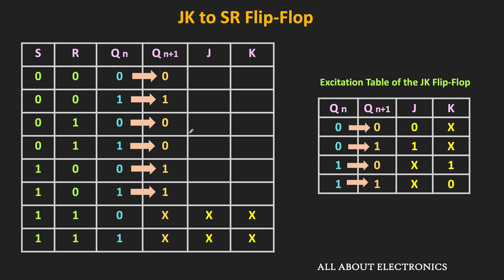From the excitation table, for the 0-to-0 transition, the required J and K inputs are 0 and X. For the 1-to-1 transition, J and K are X and 0. For the next 0-to-0 transition, J and K are again 0 and X. For the 1-to-0 transition, J should be X while K should be 1. In this way, we found the required J and K inputs for all the transitions.